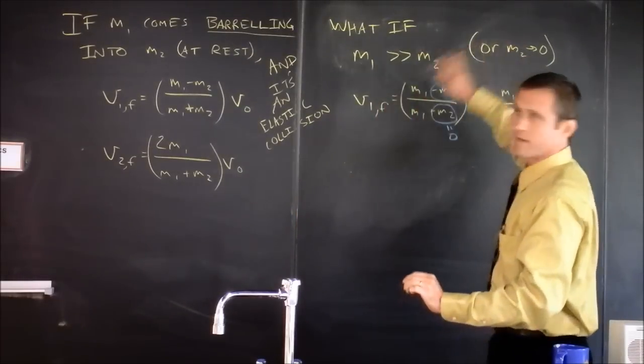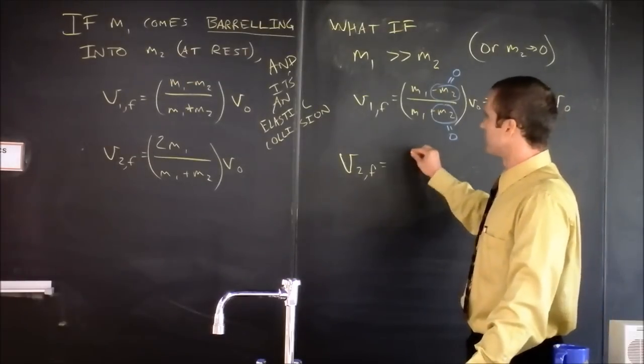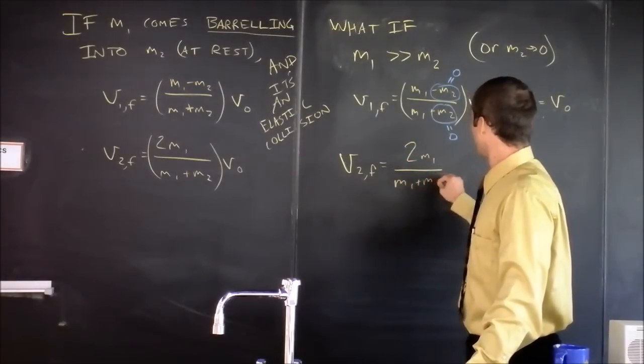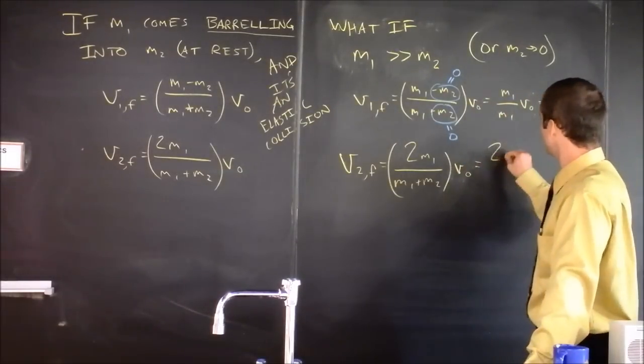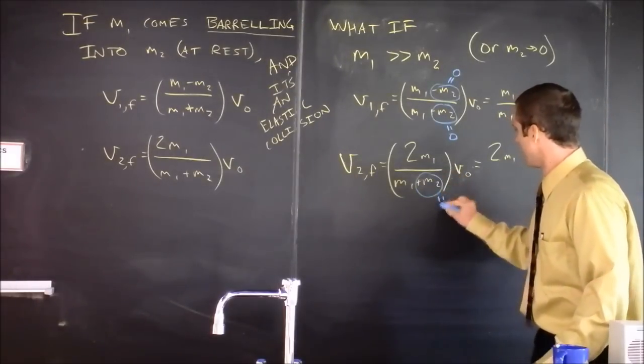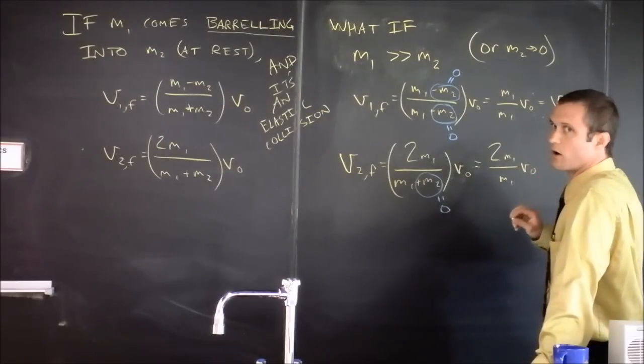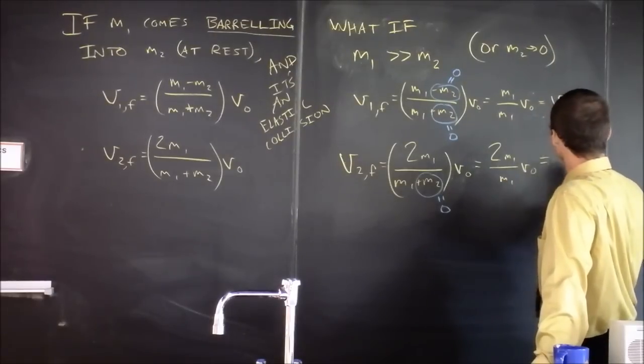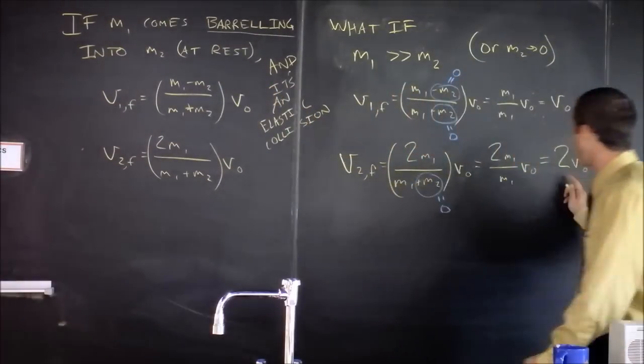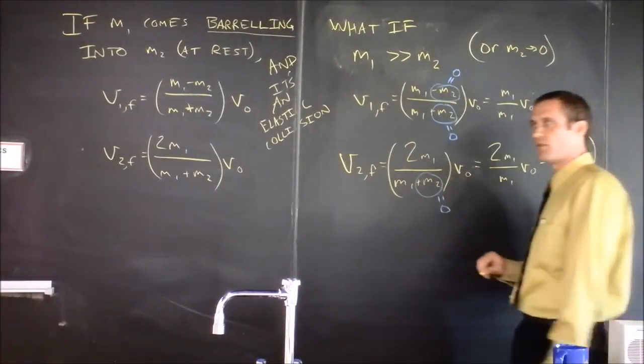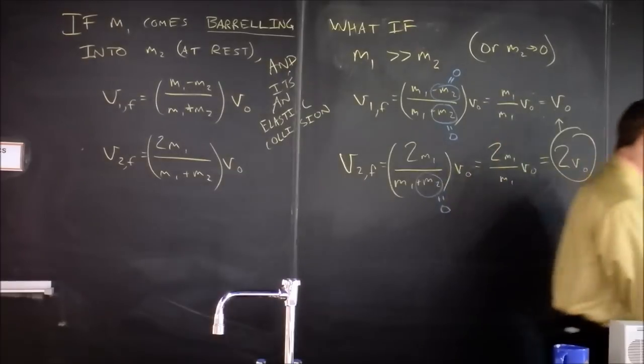However, this is just an approximation because we're doing the limit very sloppily. However, I want you to consider what's happening to the final velocity of thing two. Now we're supposed to do this equation, two times M1 over M1 plus M2 times V0. And notice that if M2 goes to zero, we have two times M1 over M1 times V0. And this is not... Oh boy. Oh boy. This says the final velocity of the thing that was at rest is twice as big as the initial velocity of the thing that came barreling in. Feels kind of funny, but I've got a wonderful example of how it works for you.